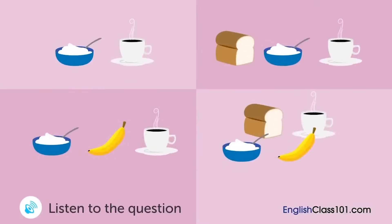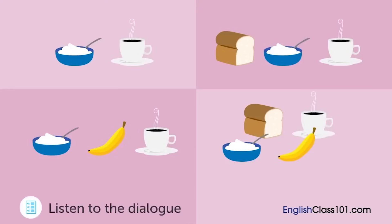A man and a woman are talking. What did the woman eat this morning? — 'I'm hungry. Did you eat anything for breakfast?' 'Yes, I did, but only a little.' 'What did you eat?' 'I had yogurt and coffee.' 'That's not enough. You'll need some bread and fruit, too.'